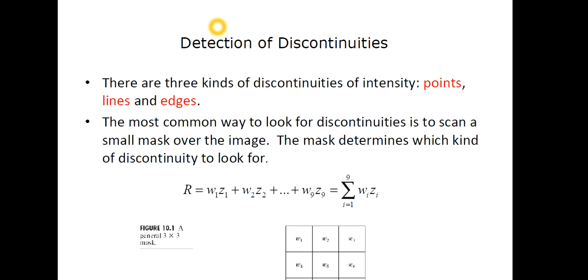Now, detection of discontinuities. We have three kinds of discontinuities of intensity: points, lines, and edges. You should note down. These are the three kinds of discontinuities of intensity of an image. And the most common way to look for discontinuities is to scan a small mask over the image. And the mask determines which kind of discontinuity to look for.